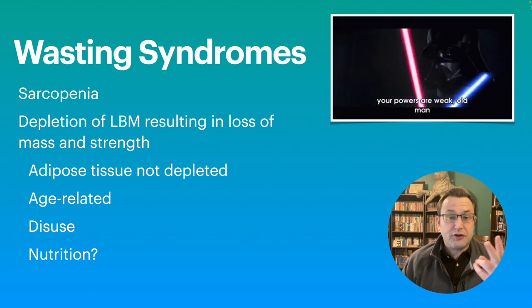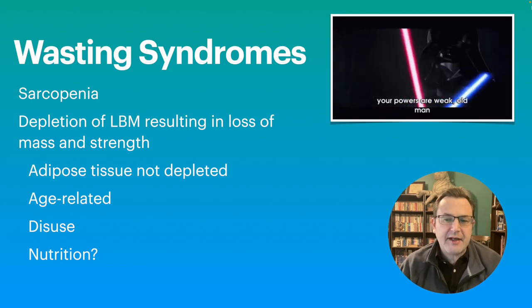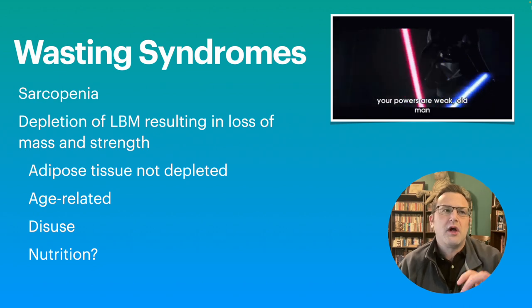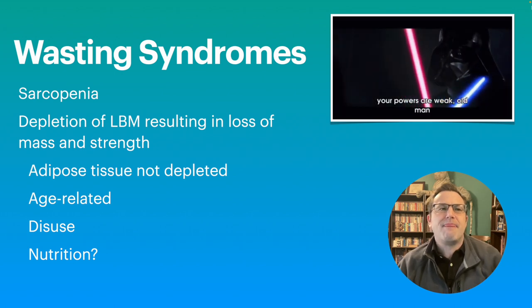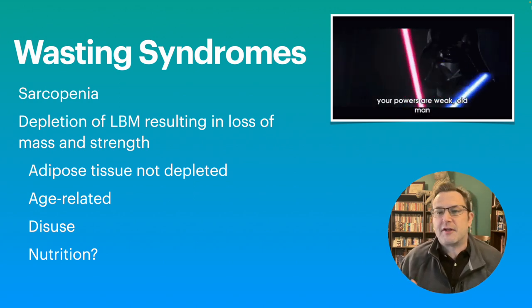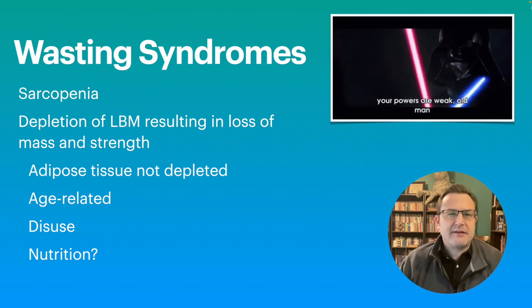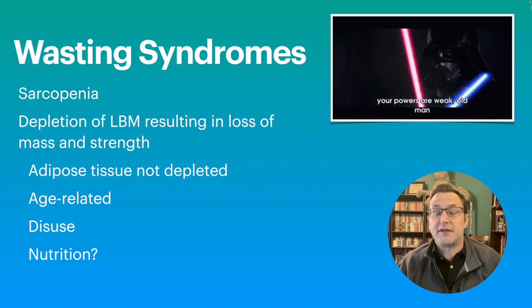We'll also discuss wasting syndromes. There are two specifically within the context of aging. The first is sarcopenia, which is the depletion of lean body mass and results in the loss of mass and strength. Generally speaking, in sarcopenia, adipose tissue is not depleted at all. It can be age-related but isn't necessarily so. There's age-related sarcopenia, sarcopenia related to disuse, related to injury, and a person can have more than one. The evidence on sarcopenia being related to nutrition is not strong, but nutrition is definitely important in recovering from sarcopenia.